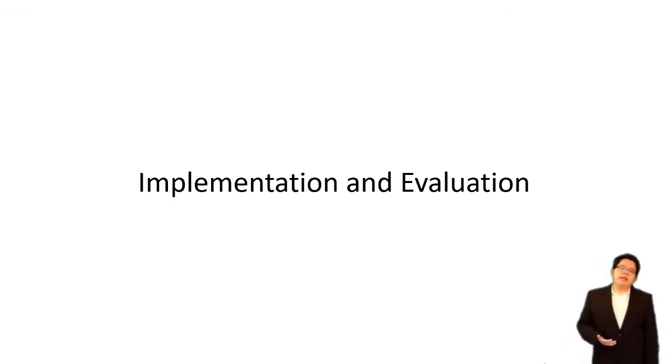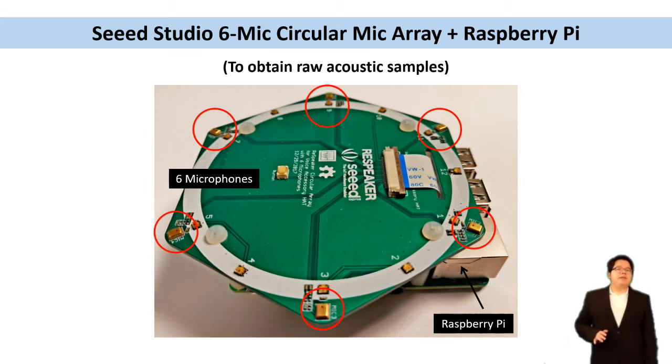At the end, let's see the Volock implementation and evaluation. Because native Amazon Echo speaker does not provide audio samples, we use a six-microphone circular array on a Raspberry Pi to simulate the smart speaker.